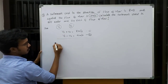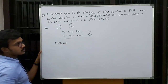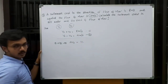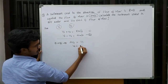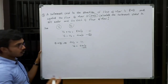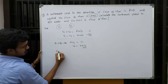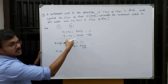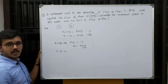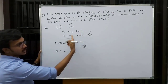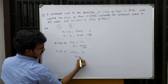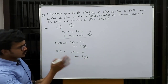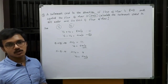To find Vs, add both equations. Vr cancels out, giving 2Vs equals 8 plus 4 equals 12, so Vs equals 6 meters per second. To find Vr, subtract equation 2 from equation 1. Vs cancels out, giving 2Vr equals 8 minus 4 equals 4, so Vr equals 2 meters per second. So the swimmer's speed in still water is 6 meters per second and the speed of flow of the river is 2 meters per second.